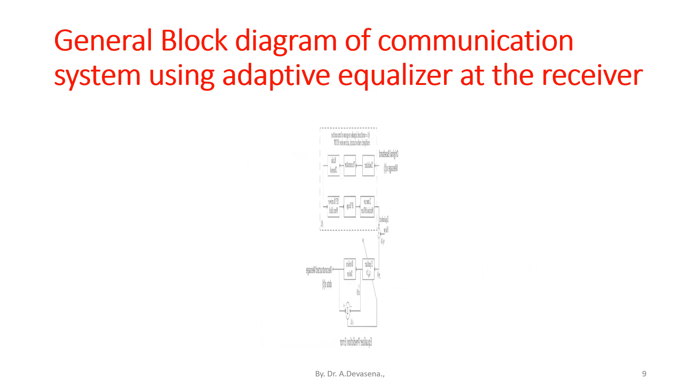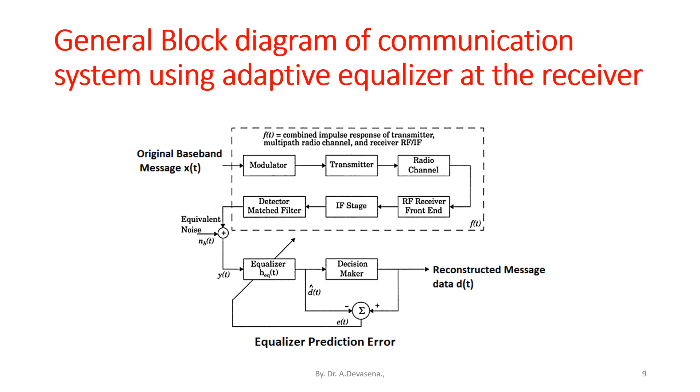General block diagram of communication system using adaptive equalizer at the receiver side is shown here. The original baseband message is x(t). That is applied to the modulator. From that, it reaches transmitter. From the transmitter, it reaches radio channel. Then here, we have RF receiver front-end IF stage detector matched filter. Then, from this, it is applied to the equalizer. Before it is being applied to the equalizer, we will be having an equivalent noise in suffix n_b(t). And from the equalizer, it passes through the decision maker and we are obtaining reconstructed message data d(t).